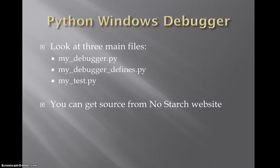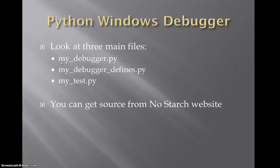The goal of the first few chapters of the book is building a Python Windows debugger. We're going to look at three main files: my_debugger.py, my_debugger_defines.py, and my_test.py. You can get the source from the No Starch website as a good starting point, then make modifications. The strategy I adopted was to have the source in a folder on my desktop and open the code in another folder in my editor, then copy, paste, and modify as needed. The version in the code download isn't where you'll start — you begin with a very basic skeleton and build up to the end goal of the book. I'm almost at 15 minutes, so this is a good spot to stop. When I pick up the next video, we'll start looking at that debugger code.